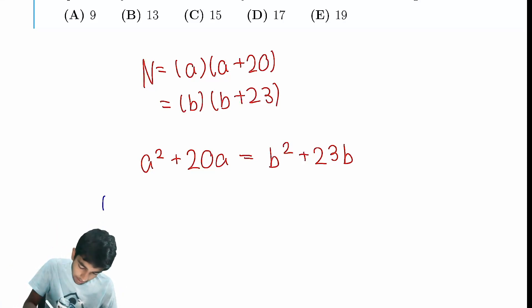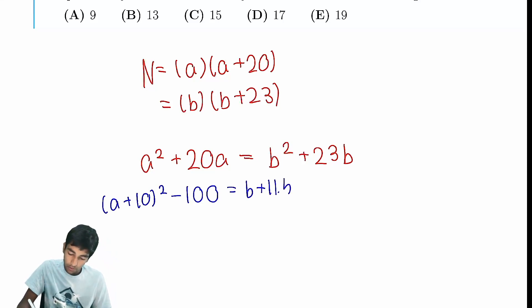So let's complete the square. Okay, so over here, we get A plus 10 squared minus 100. And over here, we get B plus 11.5 squared minus 11.5 squared. So here's where, like, huh, we don't really want to deal with 11.5, so you want to have integers. Because now this thing is not even going to be an integer.